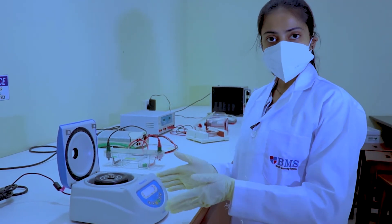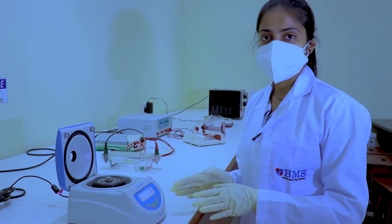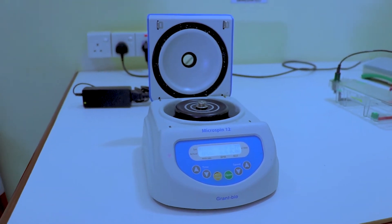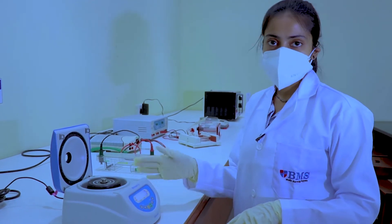Here you can see the microcentrifuge. Usually we use this for PCR master mix preparation, and the maximum speed it goes up to is 13,000 rpm.